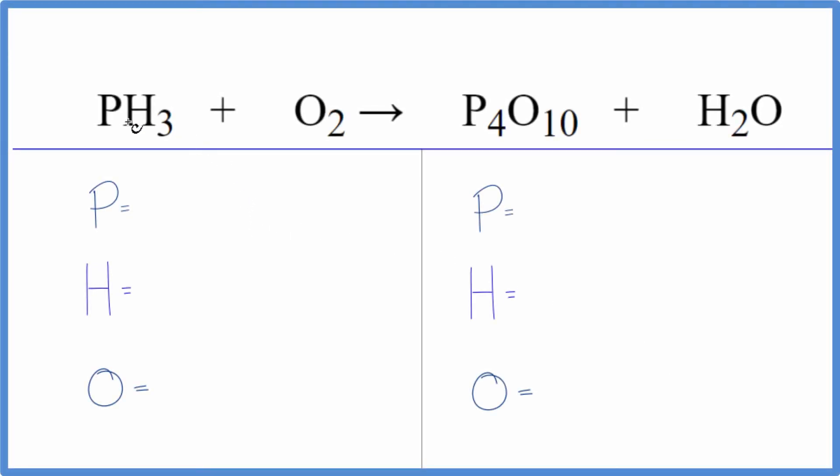In this video we'll balance the equation for PH3 plus O2. Let's count the atoms up on each side of the equation and then balance it. We have one phosphorus, three hydrogens, and two oxygens.